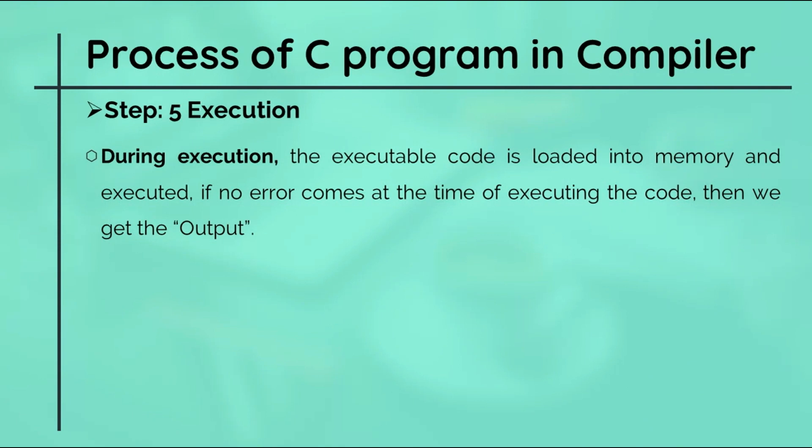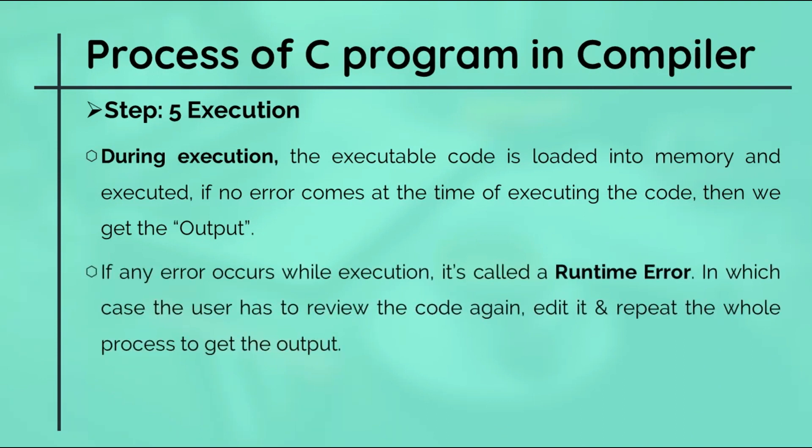During execution, the executable code is loaded into memory and executed. If no error comes at the time of executing the code, then we get the output. If any error occurs while execution, it's called a runtime error, in which the user has to review the code again, edit it, and repeat the whole process to get the output. Well, now you understand how complicated the compilation and execution process is.